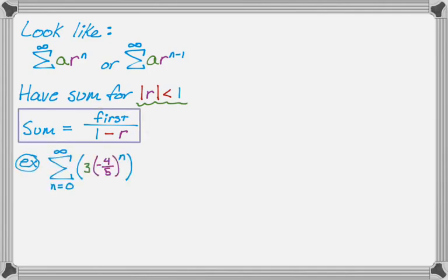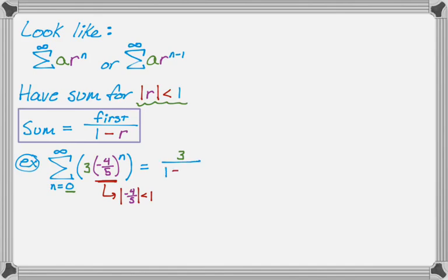Let's do a couple of examples. We have the sum from 0 to infinity of 3 times the quantity negative 4 fifths to the N. First, recognize it's geometric and decide if it converges. The absolute value of negative 4 fifths is less than 1, so it definitely converges. The first term: plug in N=0, you just get 3. So the sum is 3 over 1 minus negative 4 fifths, which simplifies to 15 ninths, or 5 thirds.